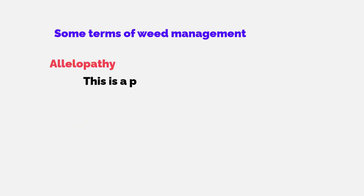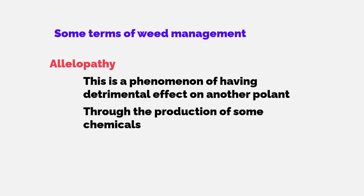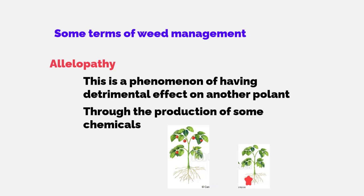Allelopathy is the phenomenon of one plant having a detrimental effect on another plant through the production of chemical compounds. When one plant releases chemical compounds that affect the growth and development of another plant, this phenomenon is called allelopathy.